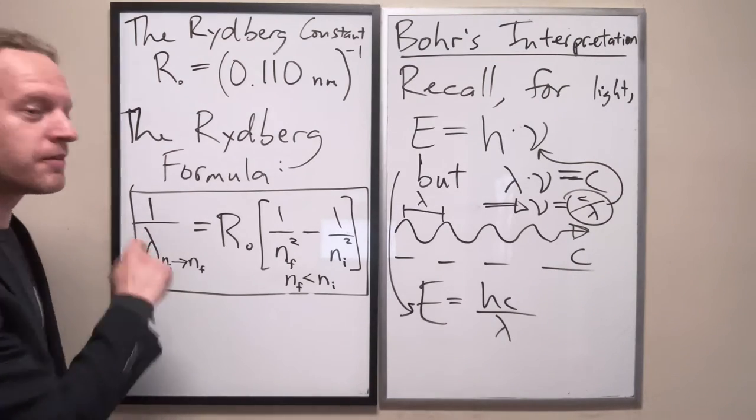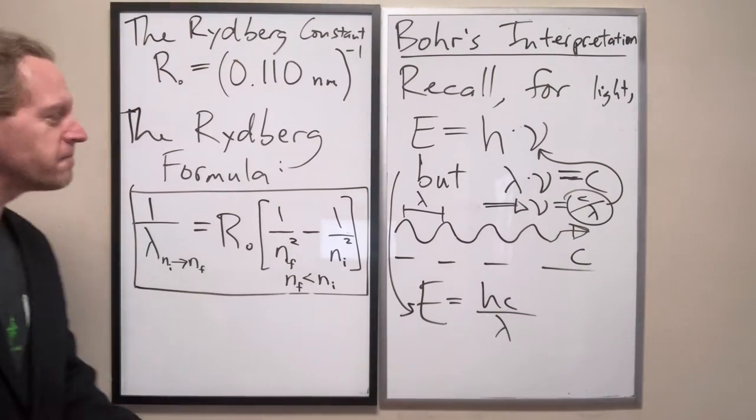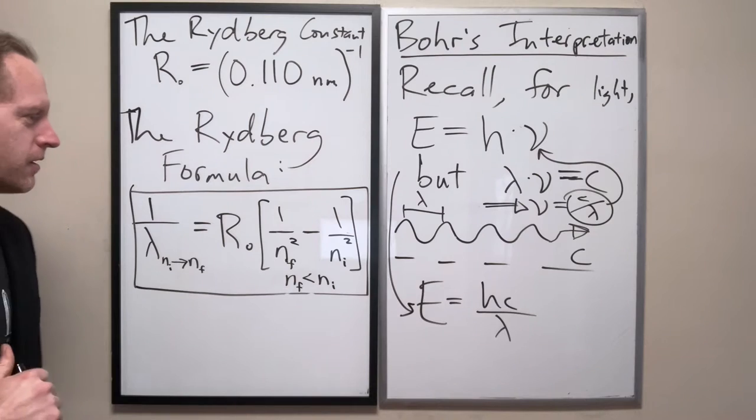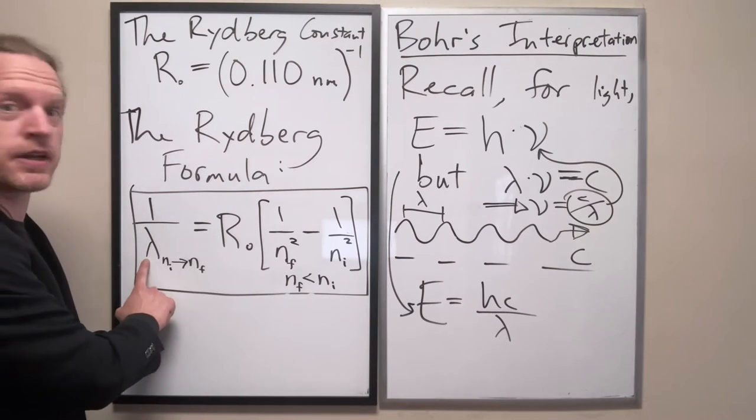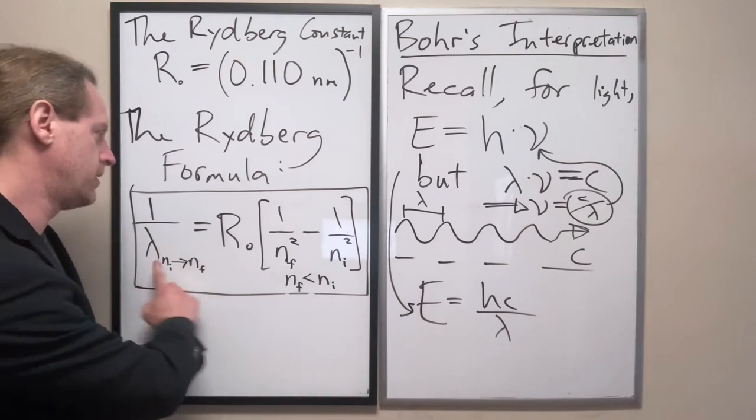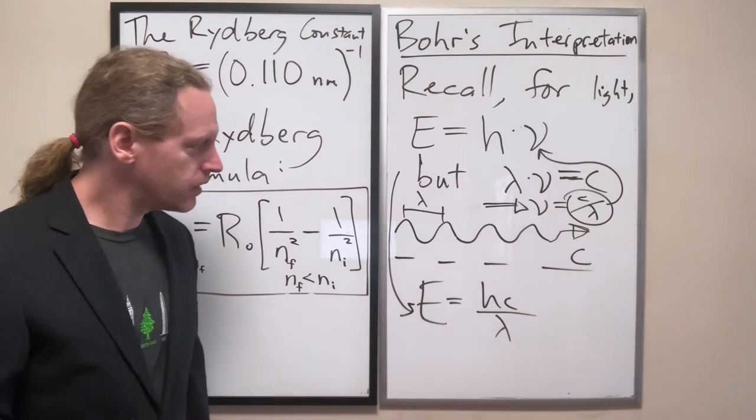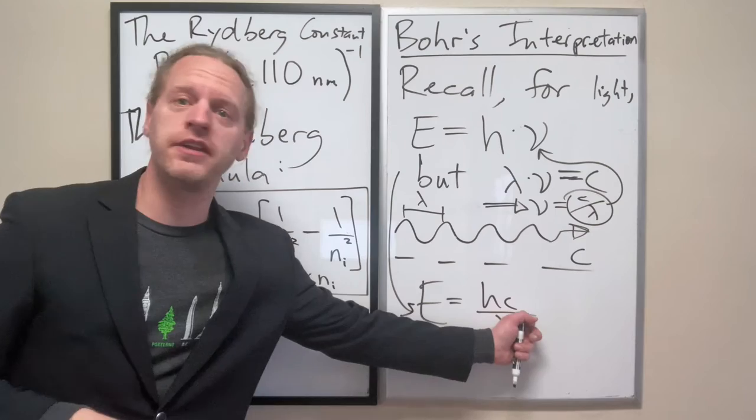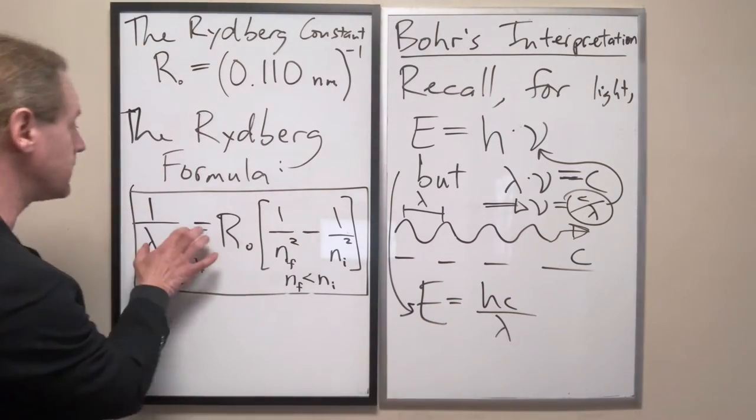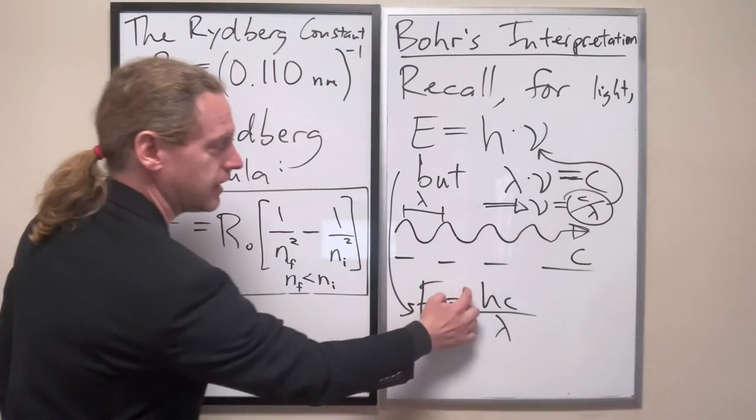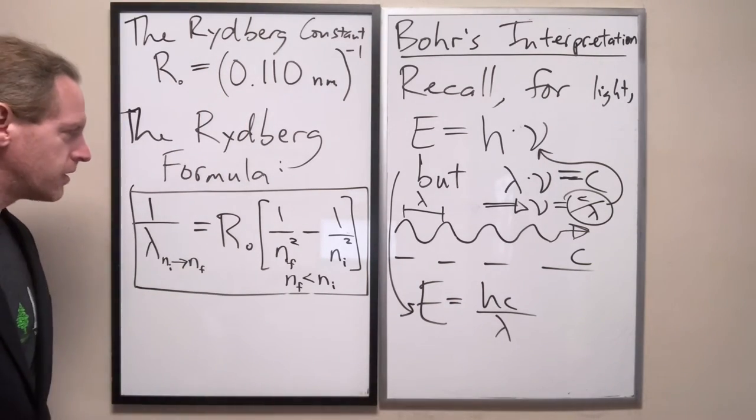And look over here. Look over here. We know that hydrogen has a series of wavelengths which can be predicted if we take 1 over lambda, set it equal to that. Over here, we see that the energy of those wavelengths can be found just by taking this exact formula and throwing a H C in front of it.